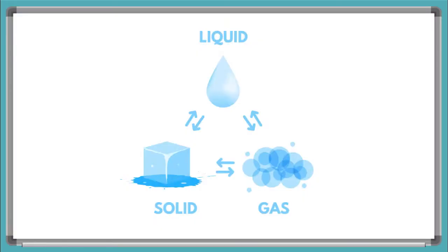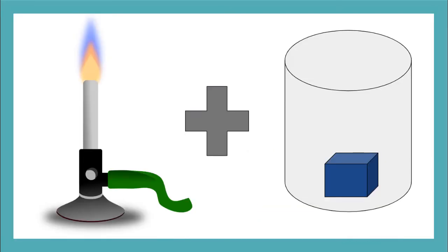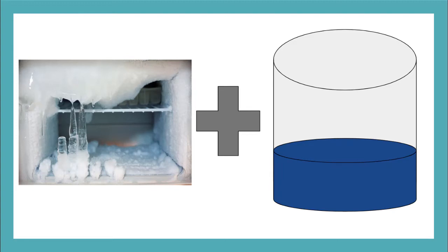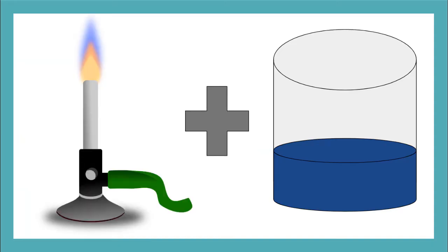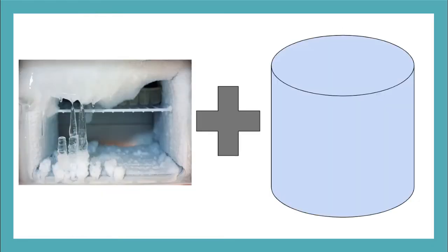We can change the state that matter is in — this is called a transition. There are four main transitions: melting, which happens when heat is applied to a solid and it transitions to a liquid; freezing, which happens when a very cold temperature is applied to a liquid and it transitions to a solid; evaporation, which happens when heat is applied to a liquid and it transitions to a gas; and condensation, which happens when cold temperatures are applied to a gas and it transitions to a liquid.